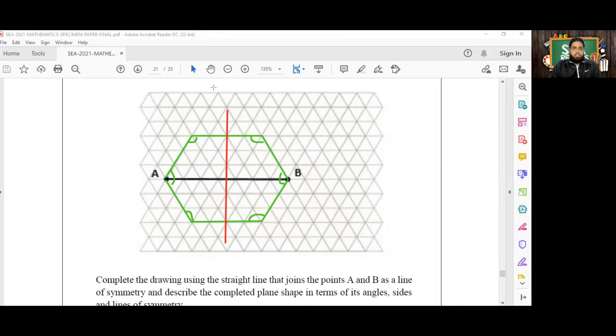The name of this shape is a hexagon. It's called a hexagon, which is a six-sided plane figure.